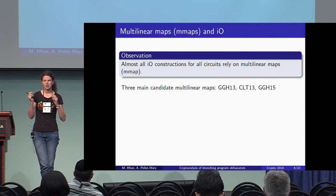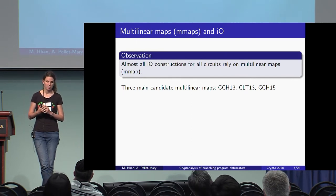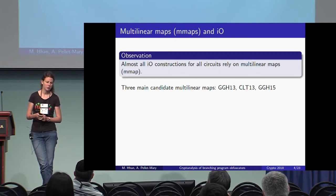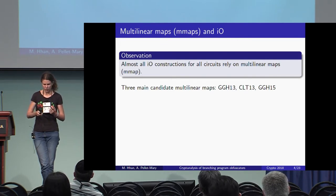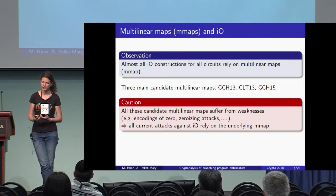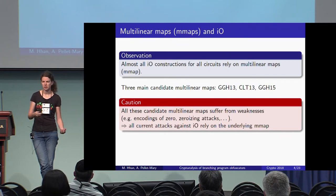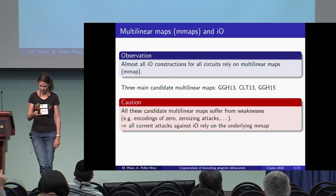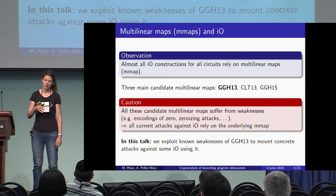Almost all candidate obfuscators we currently have rely on cryptographic multilinear maps. We have only three main candidate cryptographic multilinear maps: GGH13, CLT13, and GGH15. The problem is that all three have been shown to suffer from weaknesses, basically because of the encodings of zeros. These weaknesses do not directly imply attacks on obfuscators using them, but all attacks on candidate obfuscators rely on those weaknesses. In this talk, we use weaknesses of the GGH13 map.